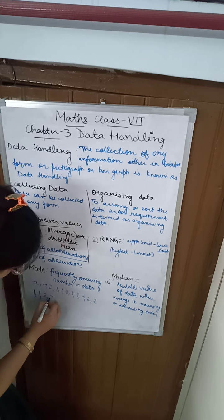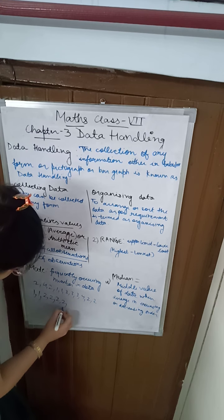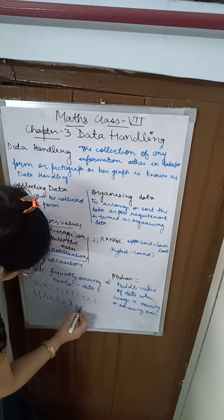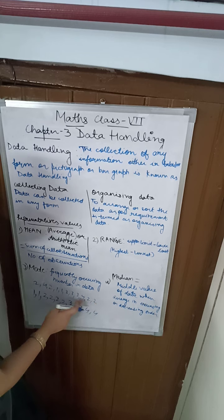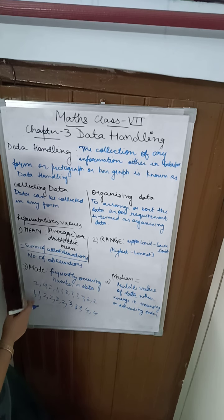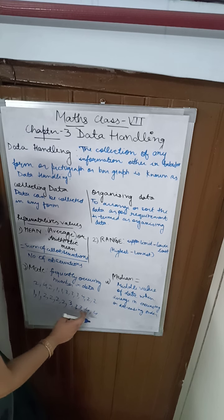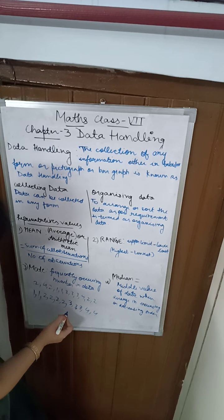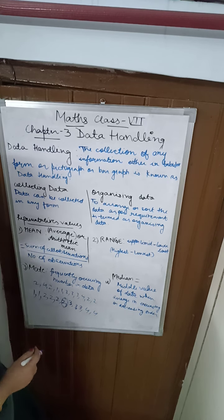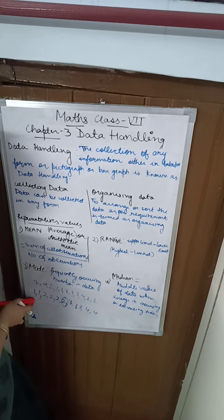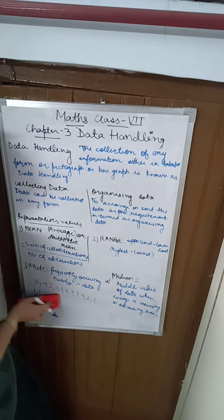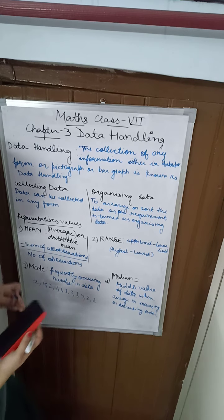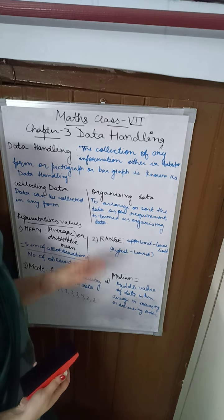After sorting the data in increasing order, you get: 1, 1, 2, 2, 2, 2, 2, 3, 3, 3, 4, 4 — which gives 11 values in total. Now count which is the middle value: 5 terms from the left side and 5 terms from the right side, and the middle value is 2. So the median is 2. Whatever is the middle value of the arranged data is the median.